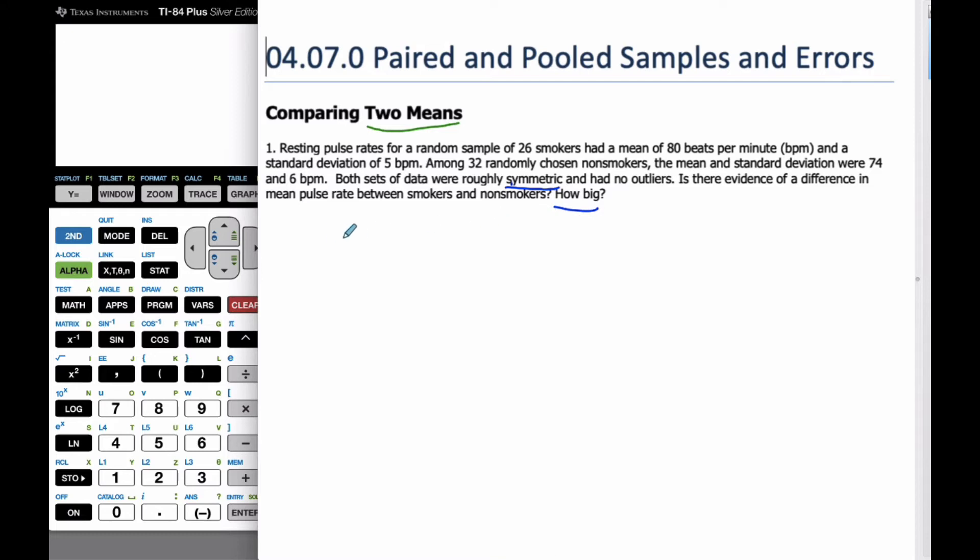For this one, we're going to do what is called a two-sample t-test. I always like to write down all the numbers that I get, so x-bar is going to be 80 beats per minute, n1 for the smokers is 26, and s1 is 5. Similarly with the non-smokers, their heart rate is 74, n2 equals 32, and the standard deviation s2 is 6.